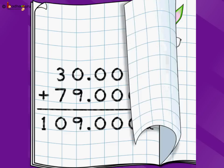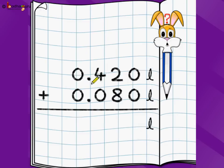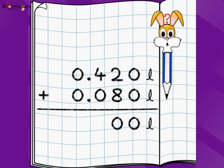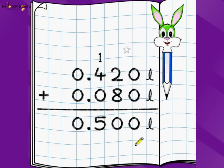Let's take another problem: 0.420 liters plus 0.080 liters. Starting from the rightmost digit — 0 plus 0 is 0, 2 plus 8 is 10, carry 1, 1 plus 4 is 5, 5 plus 0 is 5, 0 plus 0 is 0. So the answer is 0.500 liters.